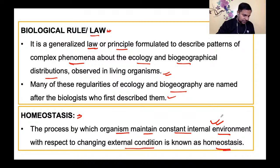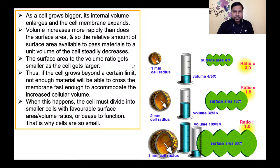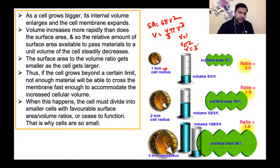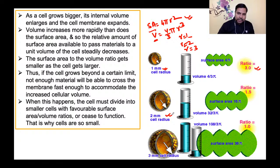अब एक scientific principle देखिए। एक cell है जिसका radius अगर 1 mm मान लें तो उसका surface area 4πr² होगा और volume 4/3 πr³ होगा। अगर r की जगह 1, 2, 3 रखें और surface area to volume ratio निकालें, तो देखेंगे कि r=1 पर ratio लगभग 3 है।